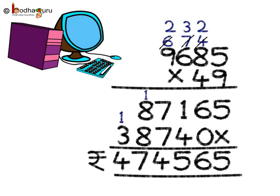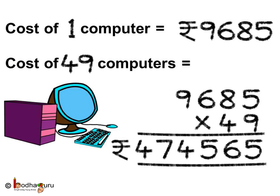Thus, the cost of 49 computers is 4 lakh 74,565 rupees. Let us see again how we solved this problem: cost of 1 computer is 9,685 rupees; cost of 49 computers is 9,685 multiplied by 49, which equals 4 lakh 74,565 rupees. Thus, the cost of 49 computers is 4 lakh 74,565 rupees.